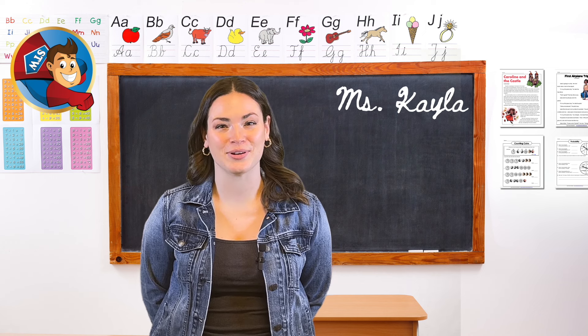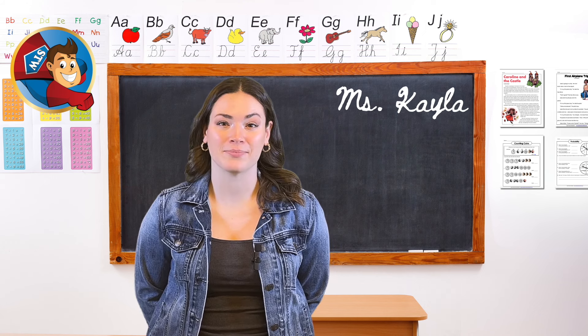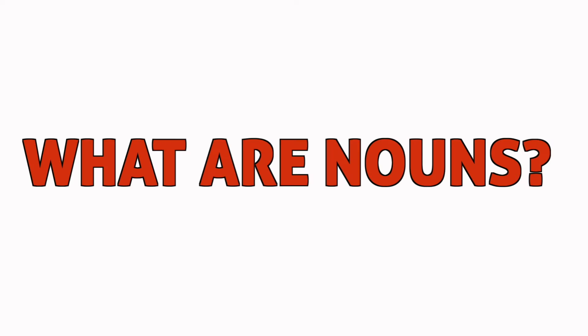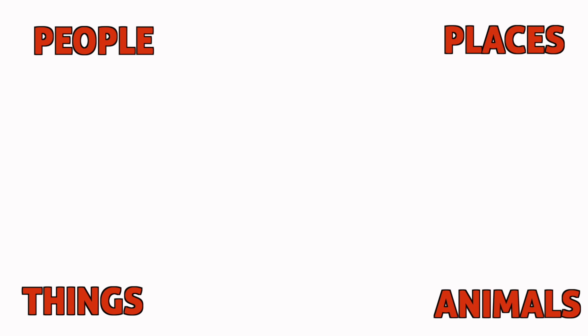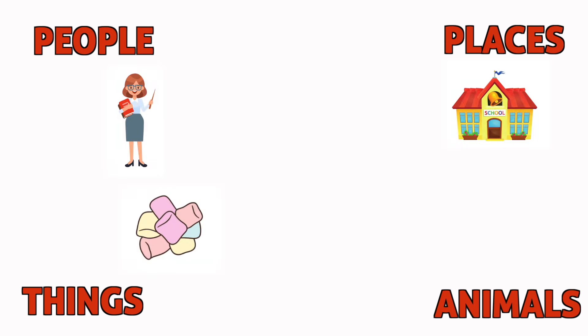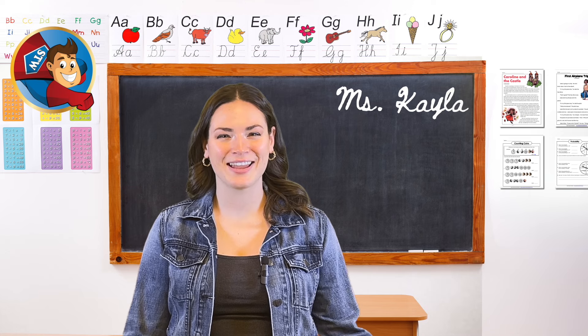But before we jump into it, let's quickly review with your students what nouns are. Nouns are words that name people, places, things, or animals. For example, teacher, school, marshmallow, and cat are all nouns. They help us identify and describe the world around us.